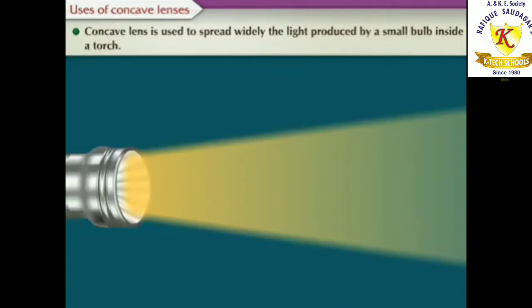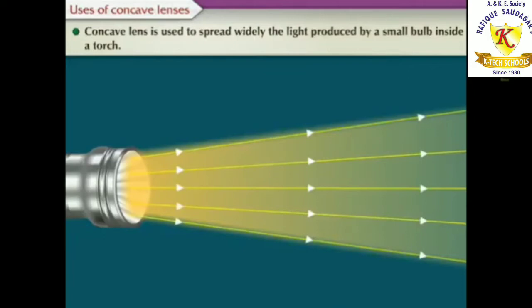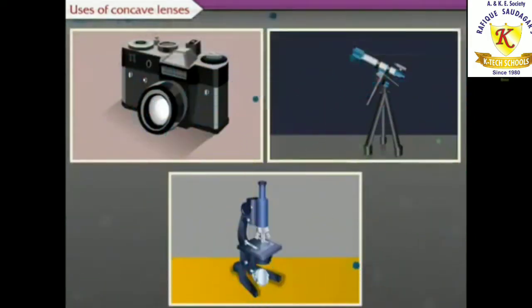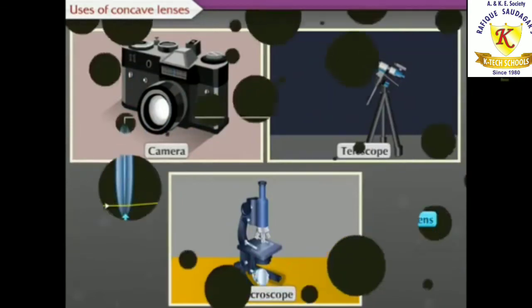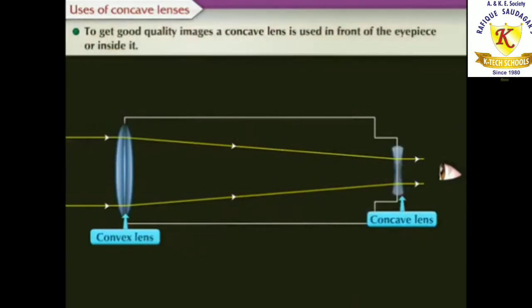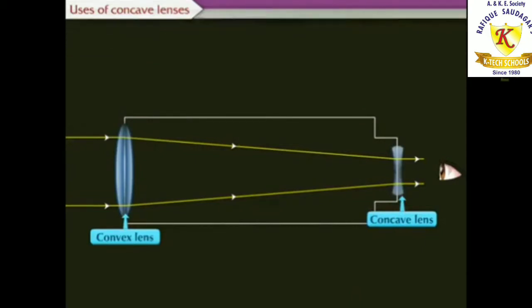Concave lens is used to spread widely the light produced by a small bulb inside a torch. Instruments like camera, telescope, and microscope mainly use convex lenses. To get good quality image, a concave lens is used in front of the eyepiece or inside it.